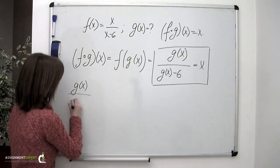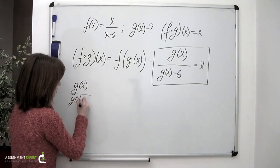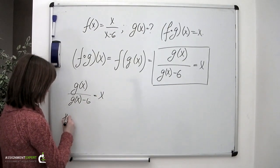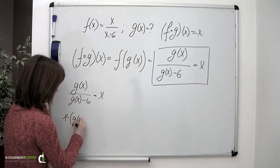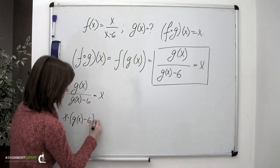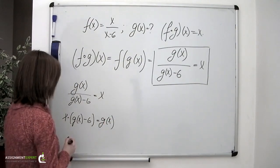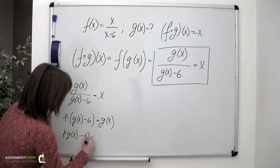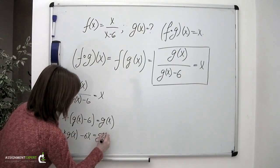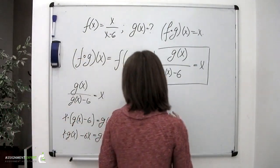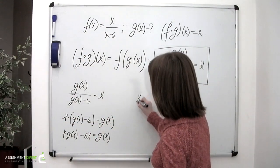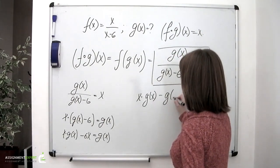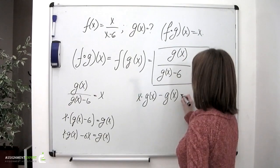g(x) over g(x) minus 6 equals x. Multiplying both sides: x times (g(x) minus 6) equals g(x). Expanding: x times g(x) minus 6x equals g(x). Rearranging: x times g(x) minus g(x) equals 6x.